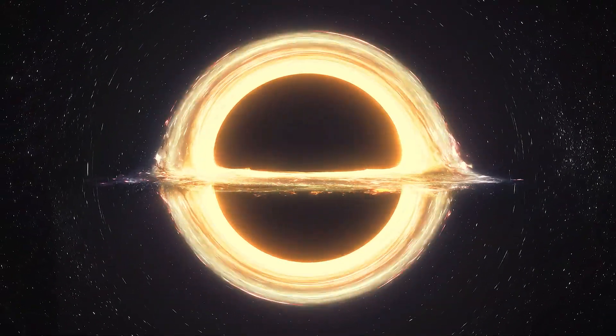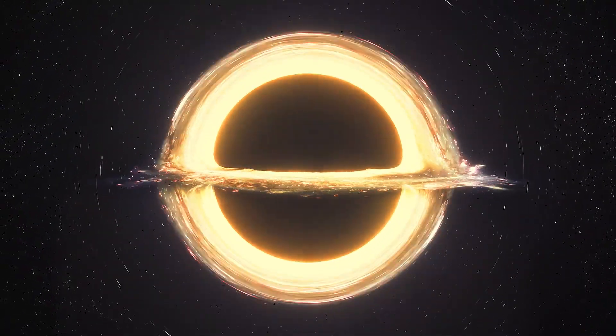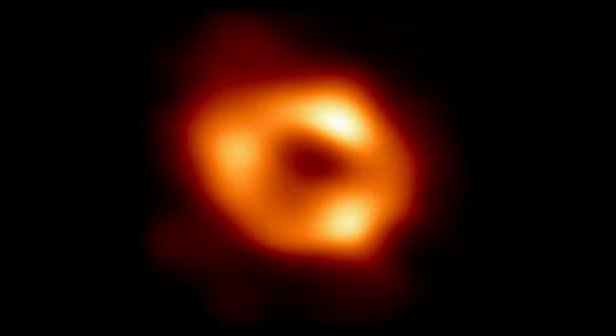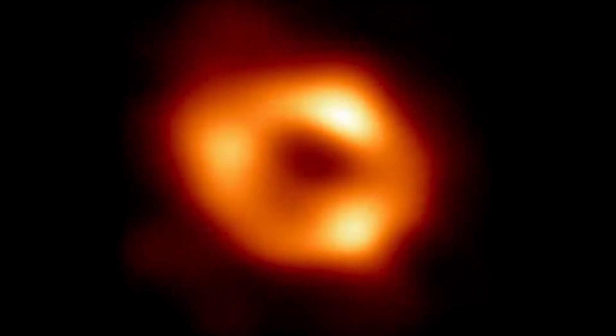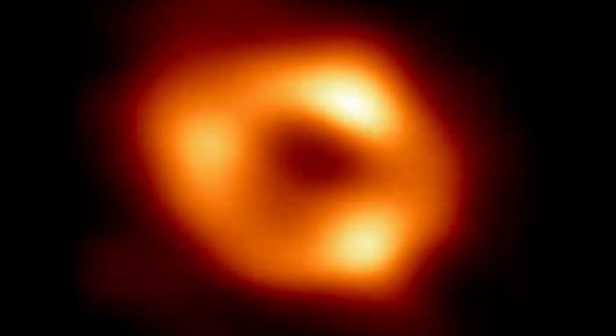The supermassive black hole in our Milky Way is known as Sagittarius A. It is 27,000 light years away from Earth. In May 2022, the image of Sagittarius A was captured by an Event Horizon Telescope as seen on the screen.